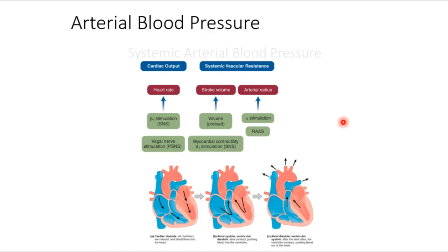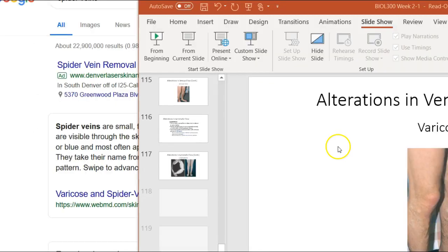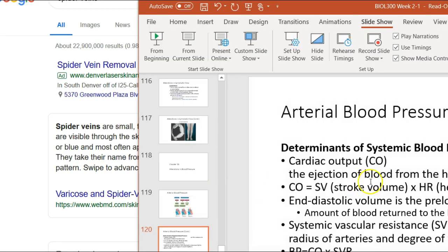You're going to need that renin-angiotensin-aldosterone system coming up in pathophysiology — it'll be all over the place. It involves multiple systems: your kidneys, liver, lungs, and adrenal cortex. All of that ultimately controls your blood pressure, appearing across all those systems independently. Higher blood volume equals higher blood pressure.